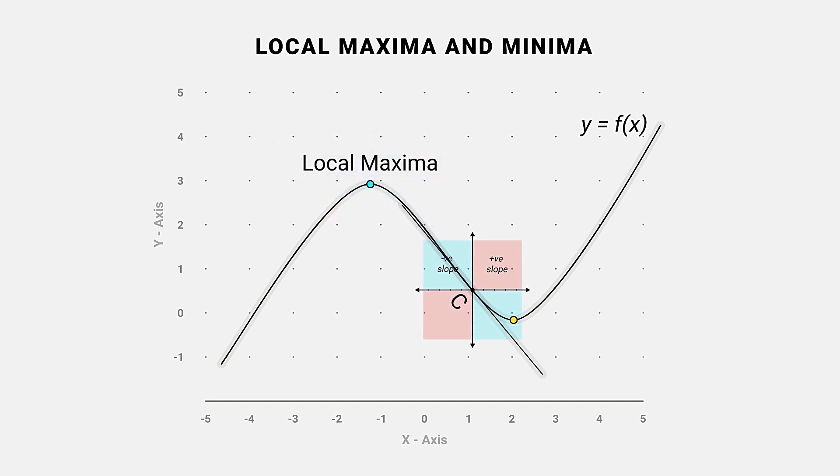If the slope of the function changes from negative to positive at c, then f of x has a local minimum value at c.